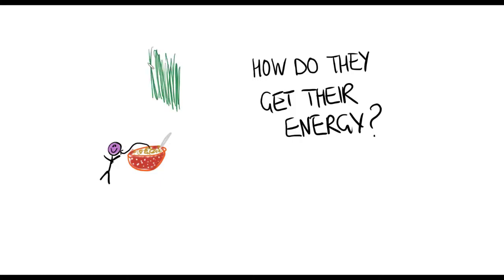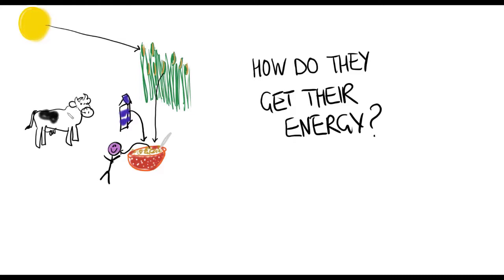Cereal was once part of a plant growing in a field and the plant would have got its energy from the sun. You probably also had milk on your cereal and you can get energy from milk as well. Where did the milk get its energy? The milk came from a cow. The cow got its energy from the grass. The grass got its energy from the sun.